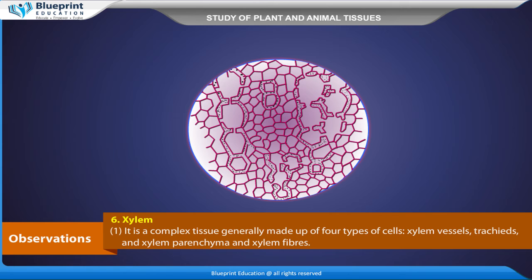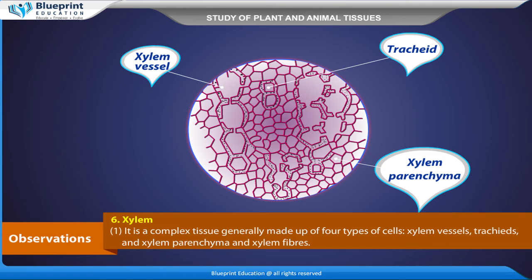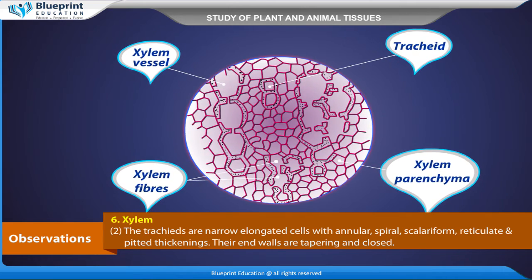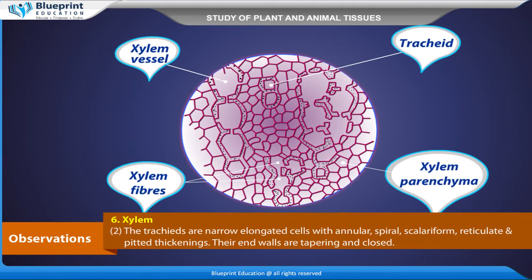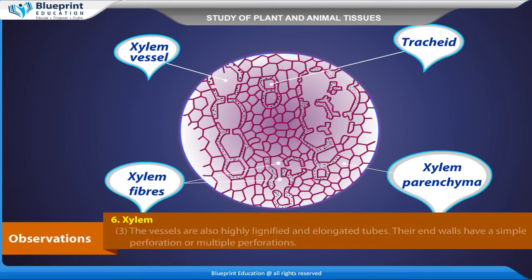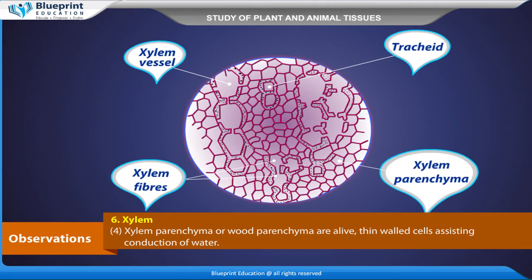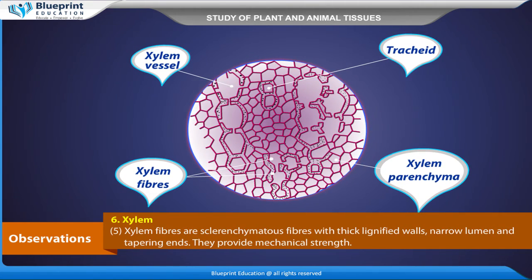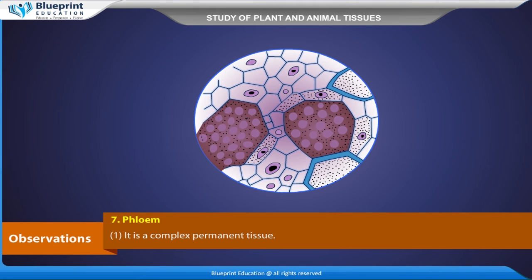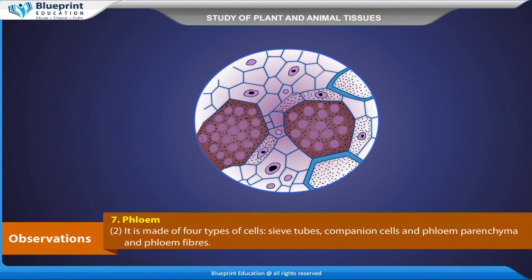Xylem is a complex tissue generally made up of four types of cells: xylem vessels, tracheids, xylem parenchyma, and xylem fibers. Tracheids are narrow elongated cells with annular, spiral, scalariform, reticulate, and pitted thickenings; their end walls are tapering and closed. Vessels are highly lignified elongated tubes whose end walls have simple or multiple perforations. Xylem parenchyma are living thin-walled cells assisting conduction of water. Xylem fibers are sclerenchymatous fibers with thick lignified walls, narrow lumen, and tapering ends, providing mechanical strength. Xylem helps in conduction of water and mineral salts from roots to the leaves.